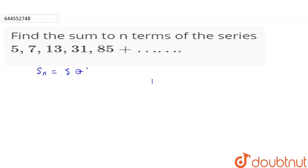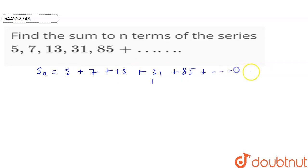Find the sum of n terms of the series 5, 7, 13, 31, 85 till n terms. So, Sn is equal to 5 plus 7 plus 13 plus 31 plus 85 till Tn minus 1 and Tn. Now, we will find the nth term and then we will find the sum of n terms.